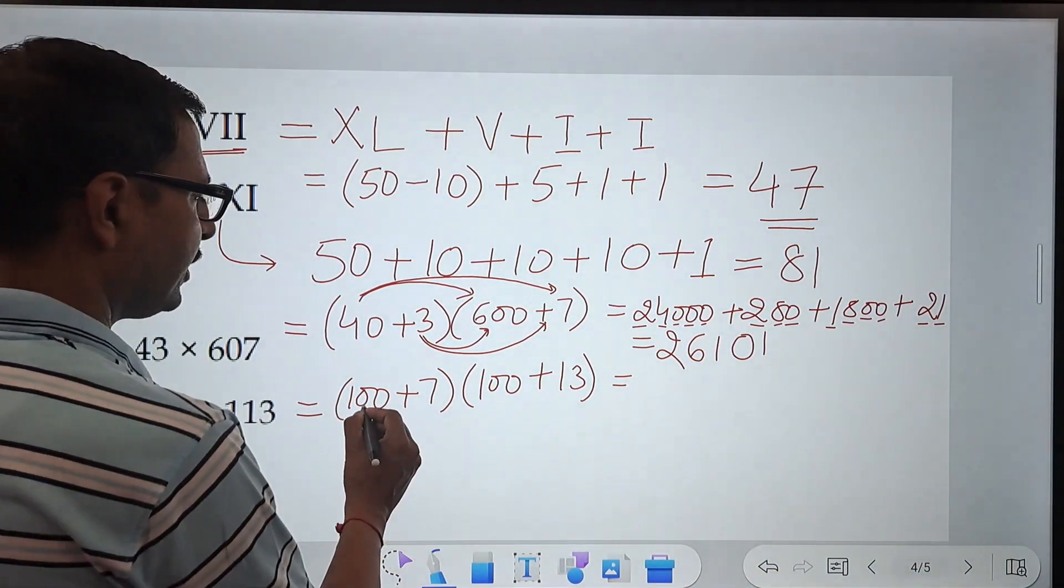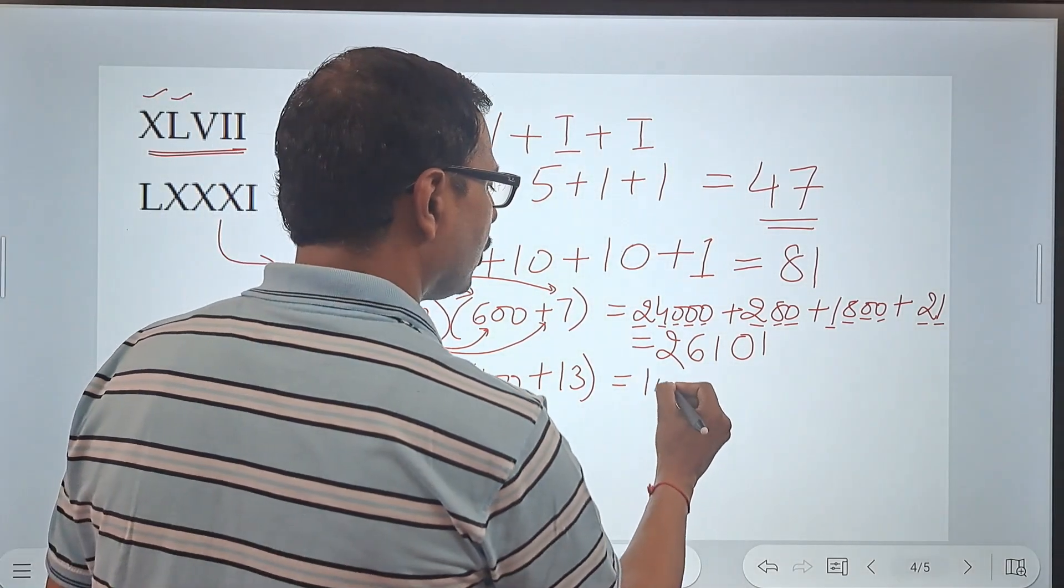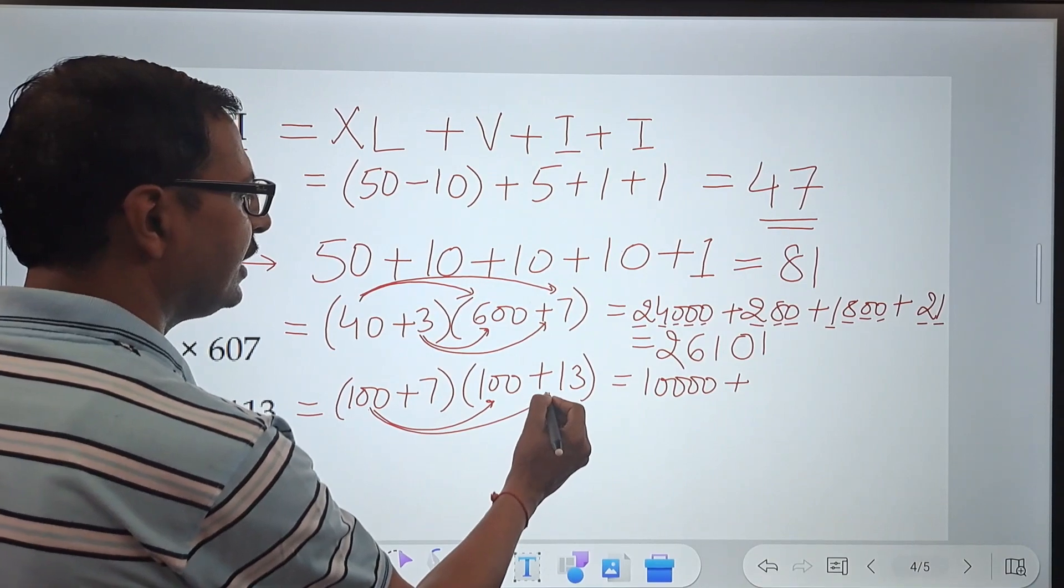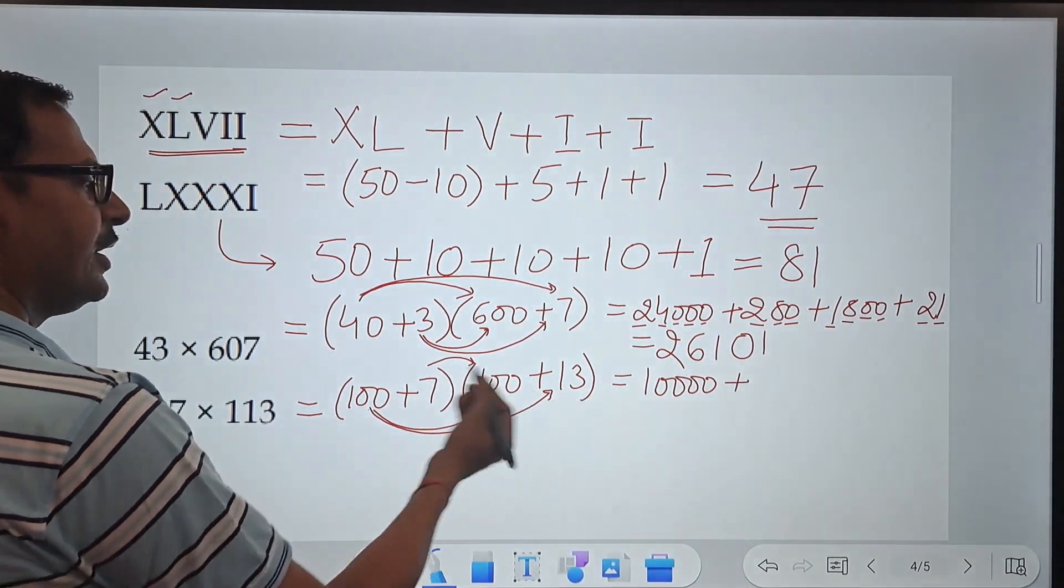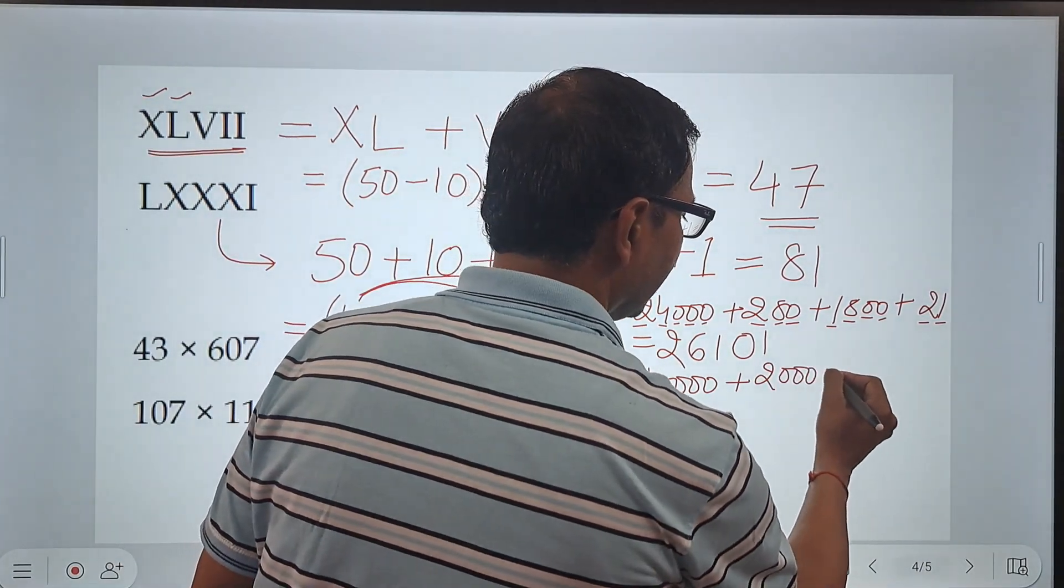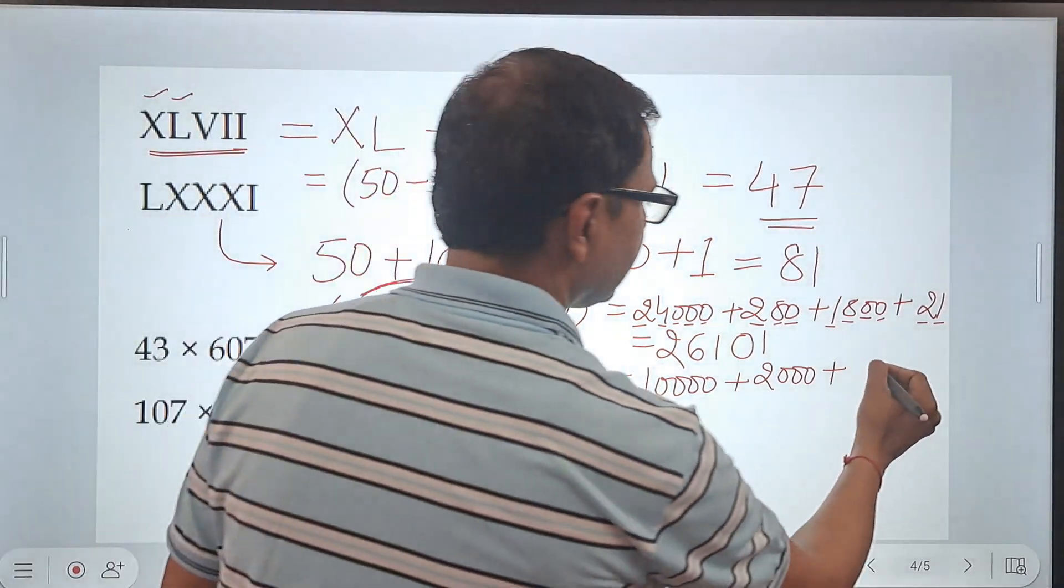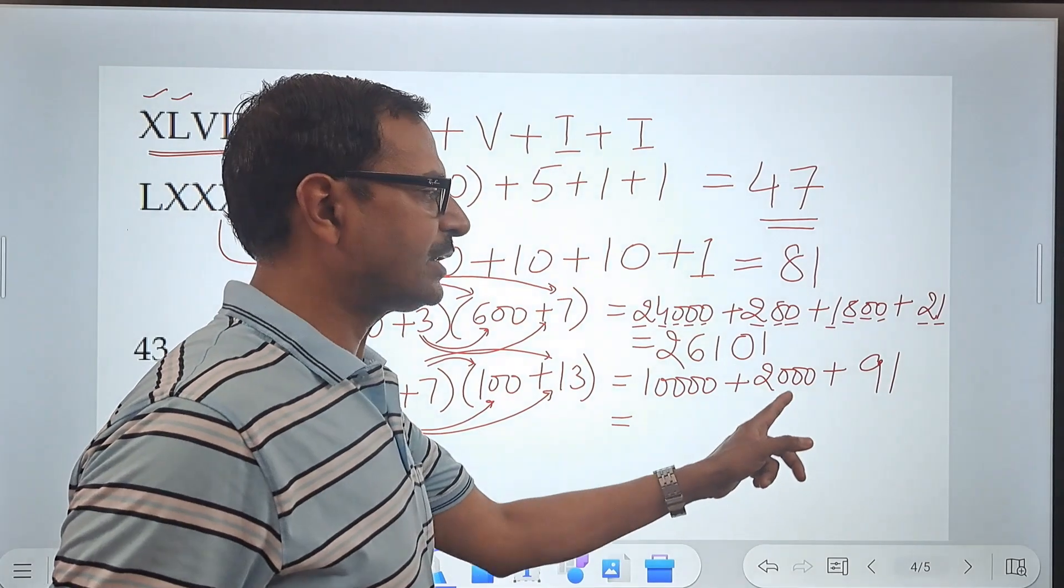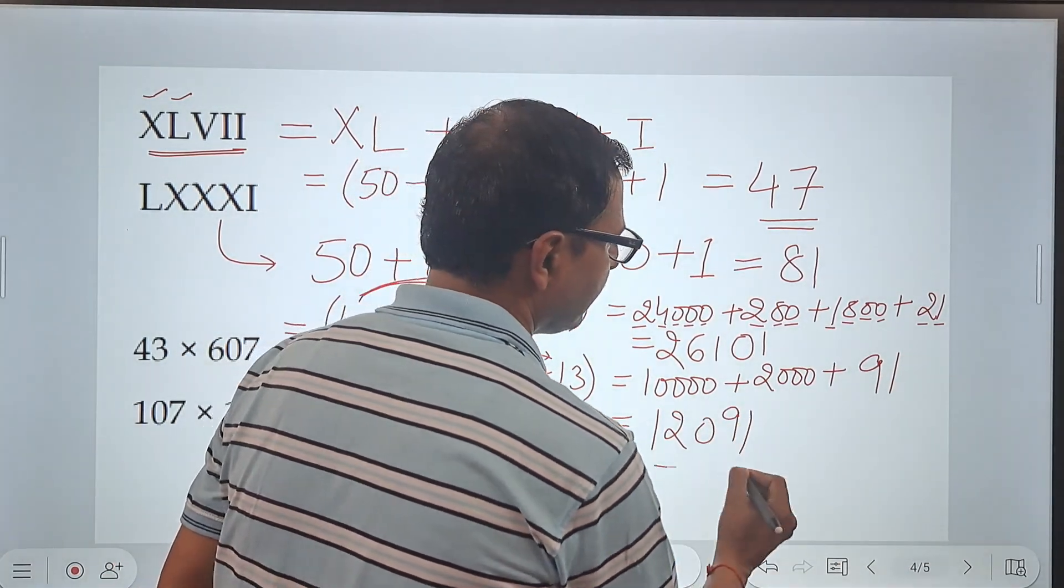Let's see this. 100 times 100, when you multiply this, you get 1 followed by 4 zeros. 100 times 13 is 1300 and 7 times 100 is 700. 1300 plus 700 is 2000. And finally, 7 times 13 is 91. And now, 10000, 12091, 12091 will be the required answer.